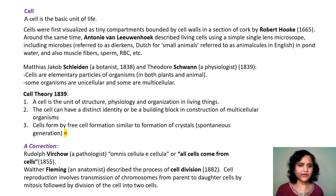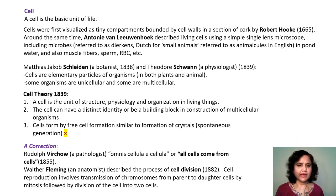Virchow, who was a pathologist, proposed that all cells come from pre-existing cells. Fleming, who was an anatomist, described the process of cell division and observed that cell reproduction involves transmission of chromosomes from parent to daughter cells by mitosis, followed by the division of the cell into two cells.